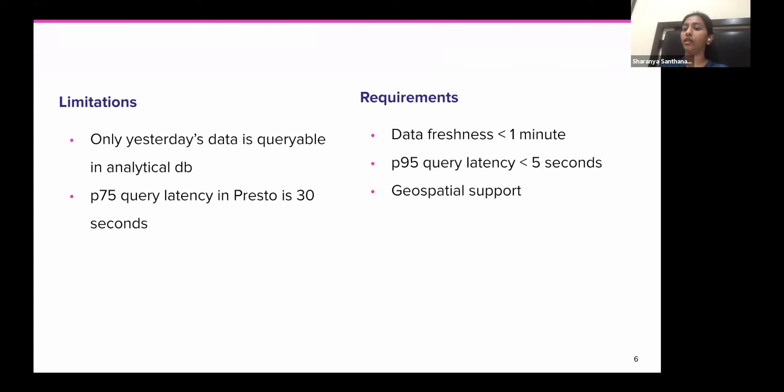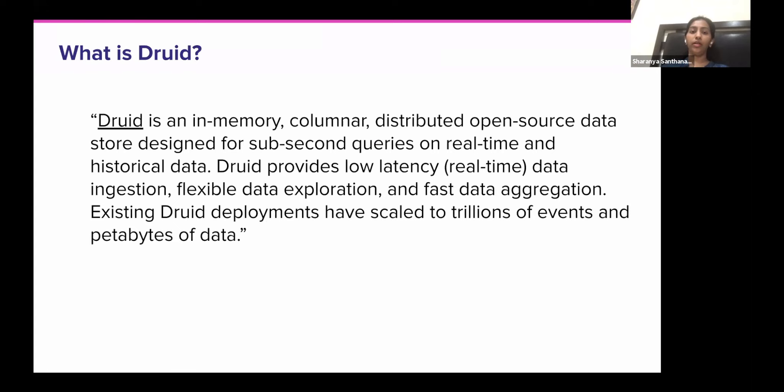So here comes Druid. Basically Druid is an in-memory columnar time series data store, designed to provide sub-second query latencies on real-time as well as historical data. Druid has been pretty popular, used across a lot of big companies, and has been known to scale really well to support trillions of events and petabytes of data.